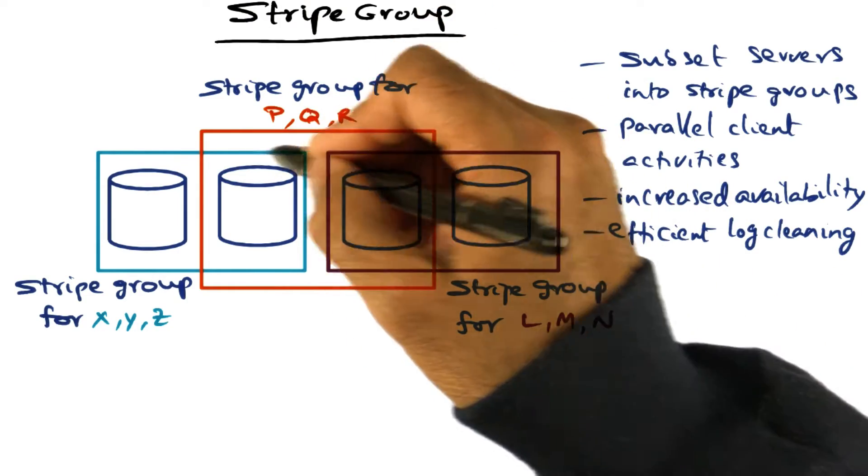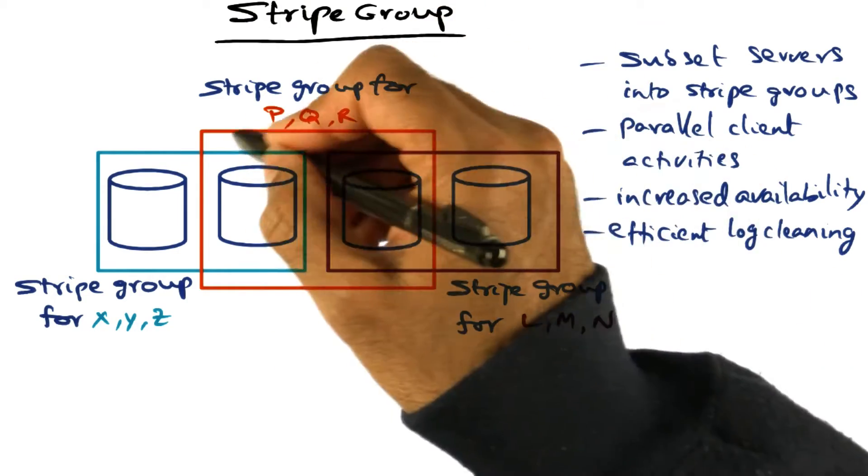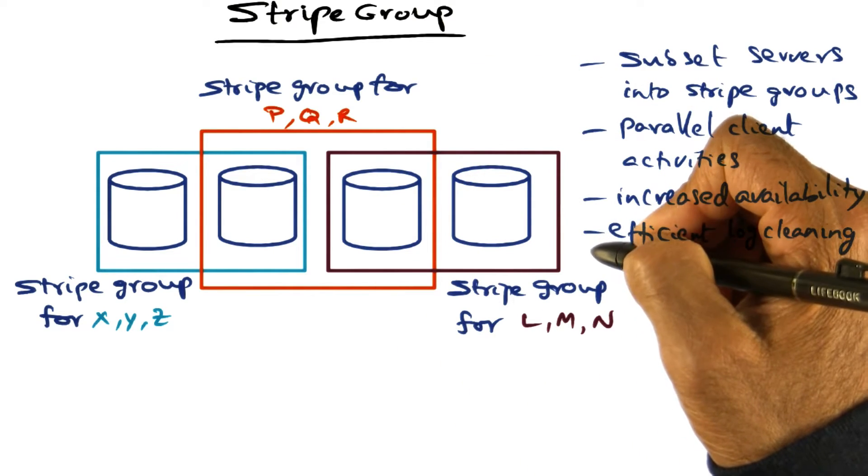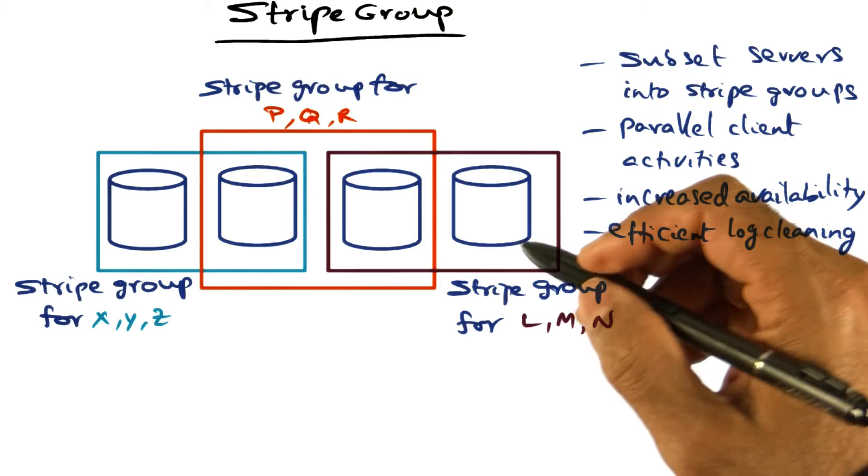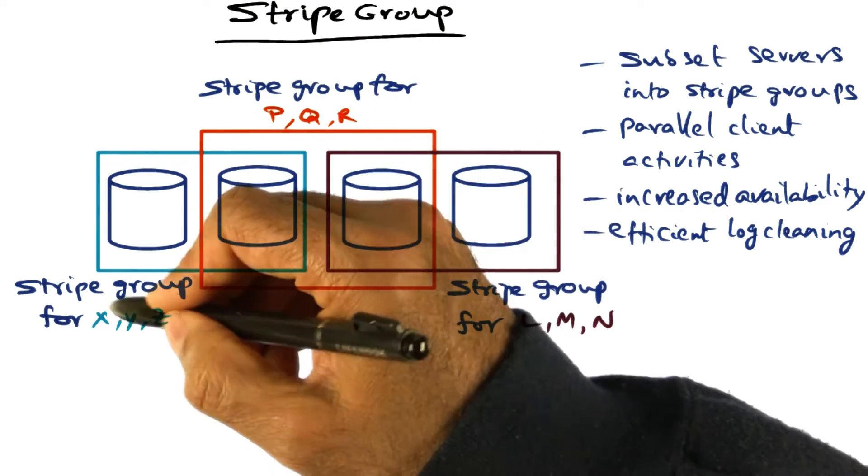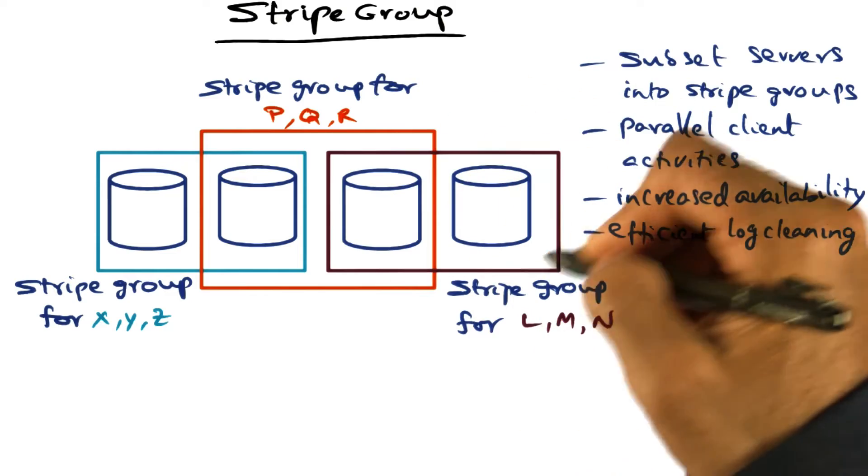and if the log segments P, Q, and R belong to a different client, and L, M, and N belong to a different client, then you can see that the client activity corresponding to this particular stripe group can go on in parallel with this.